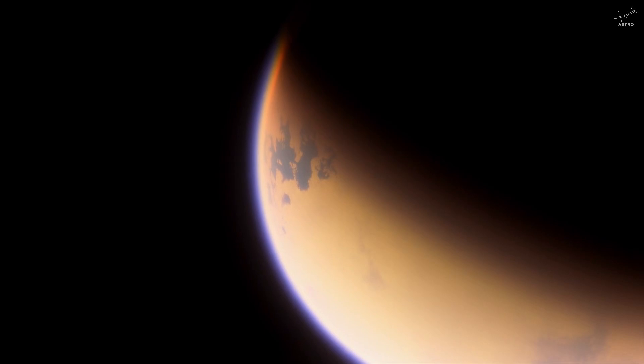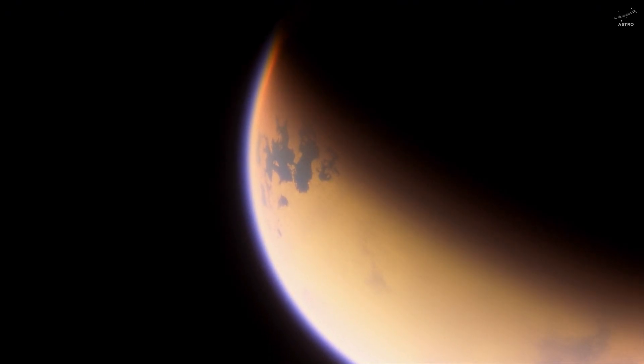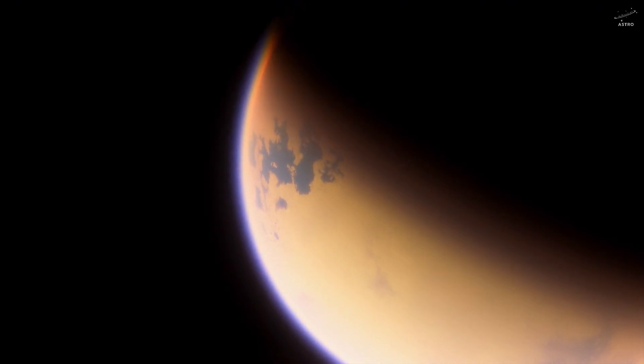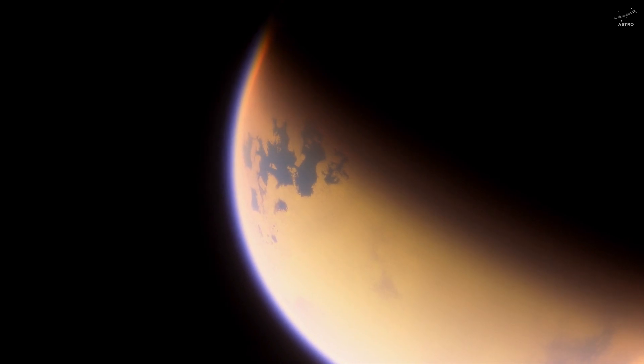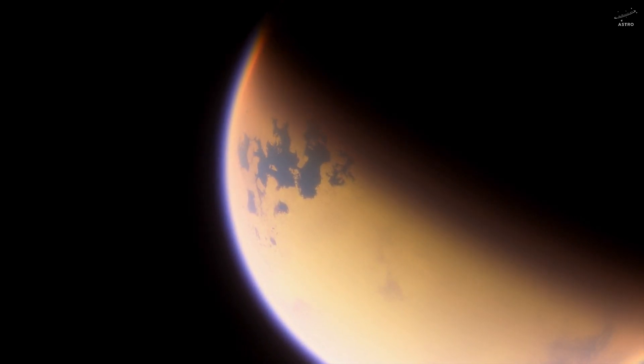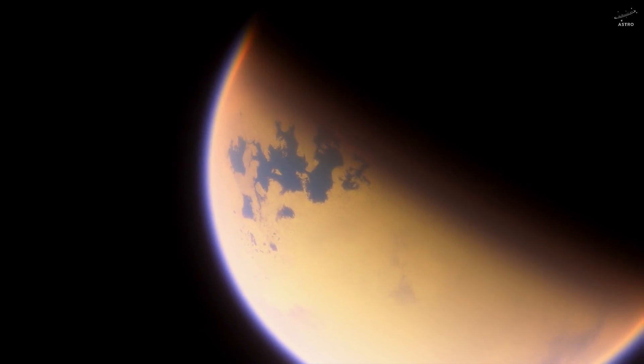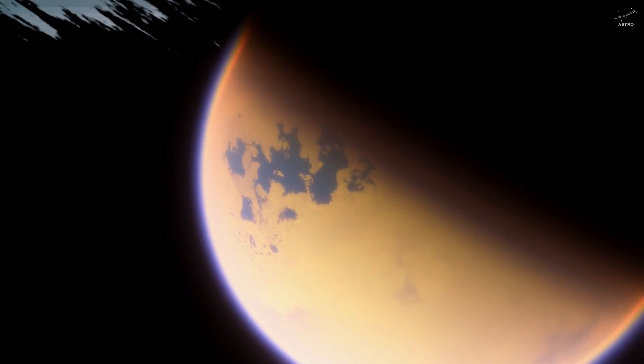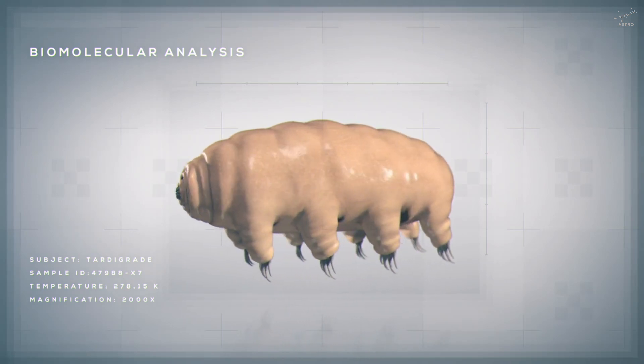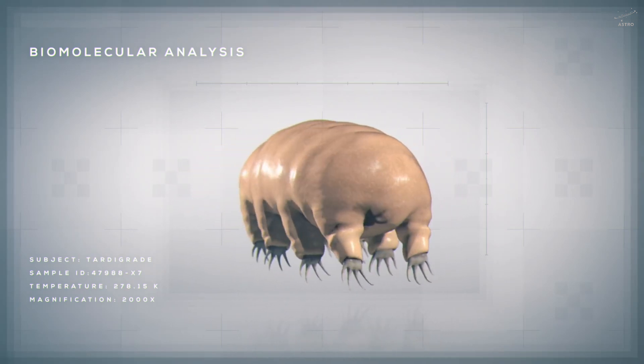Now picture Titan, Saturn's largest moon. It's cold, alien, and filled with lakes of liquid methane. But it has a thick atmosphere and maybe enough shelter for something strange and alive. Worlds like these might be hiding their own version of the tardigrade.